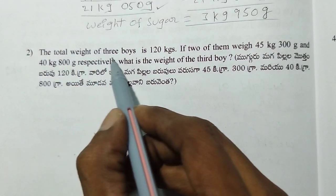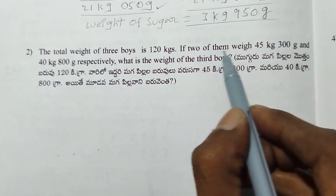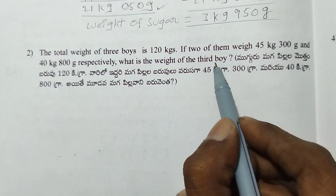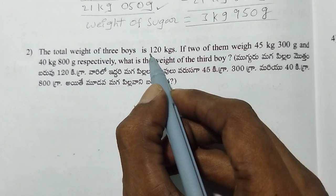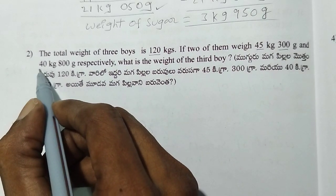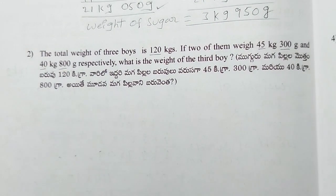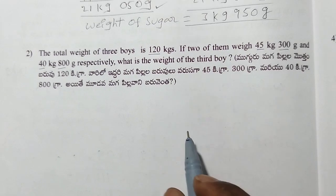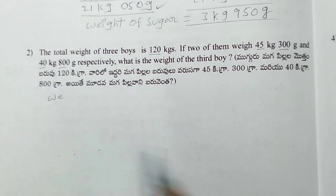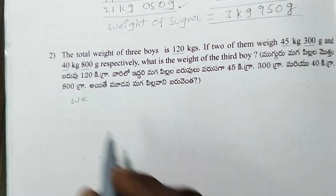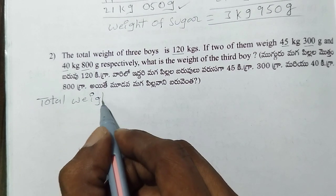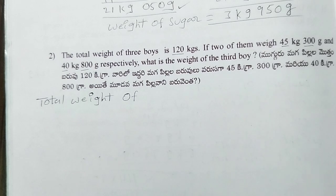The total weight of three boys is 120 kg. If two of them weigh 45 kg 300 grams and 40 kg 800 grams respectively, what is the weight of the third boy? The weight of the three boys is 120 kg, with the first weighing 45 kg 300 grams and the second 40 kg 800 grams.